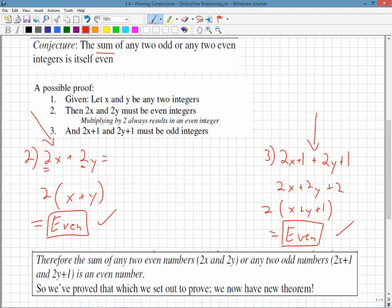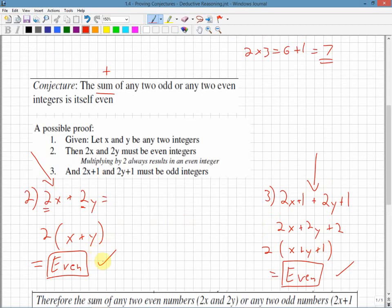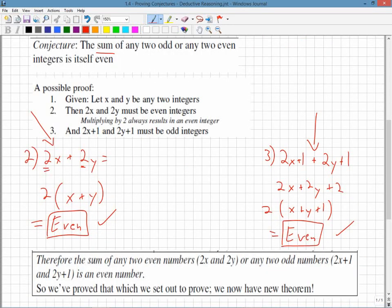So we've proved that which we set out to prove. We now have a theorem. So this conjecture we can now use to prove something else. So hopefully that shows you how to go through a deductive, a formal deductive proof. Typically they use algebra. It's the best way to work because you can use let statements. x and y can be this, x can be this, 2x can be this, 2x plus 1 can be an odd number. So you can work with stuff you know.